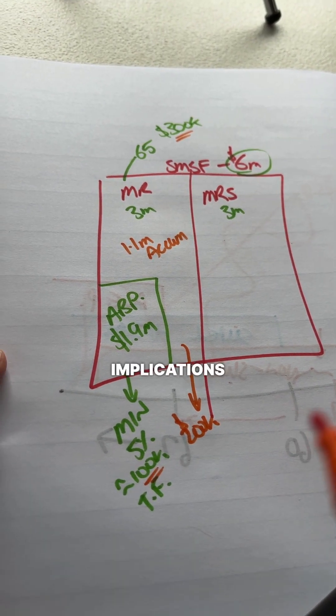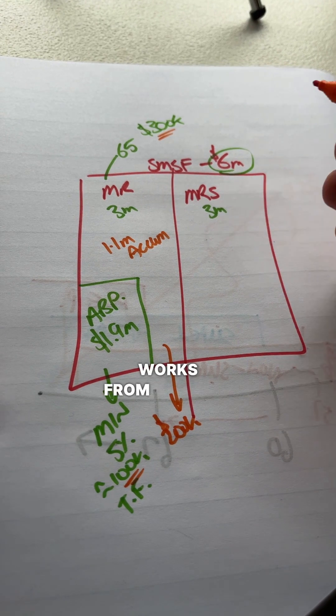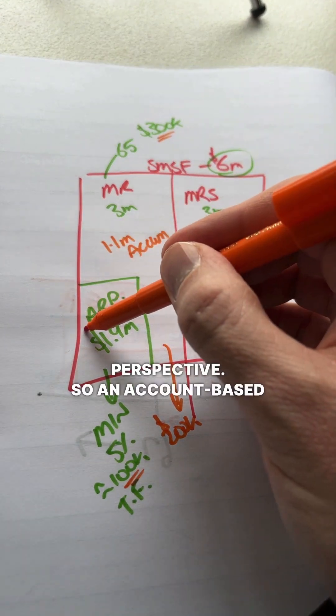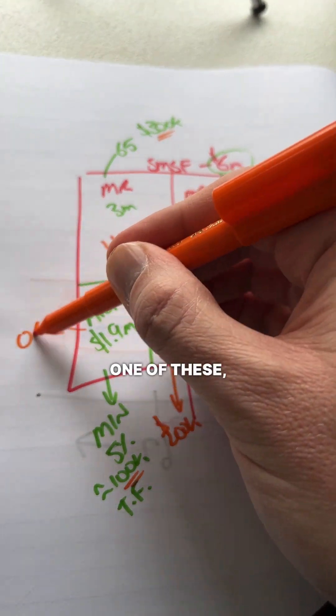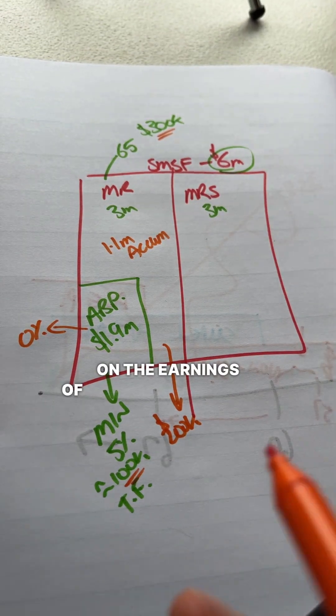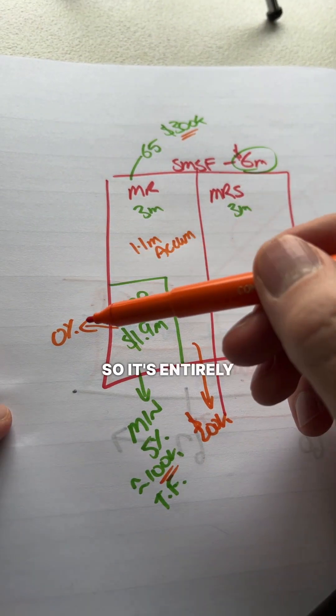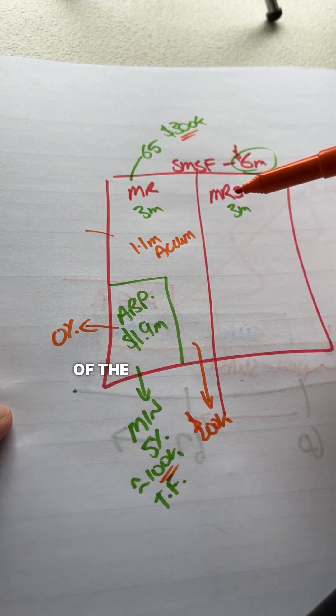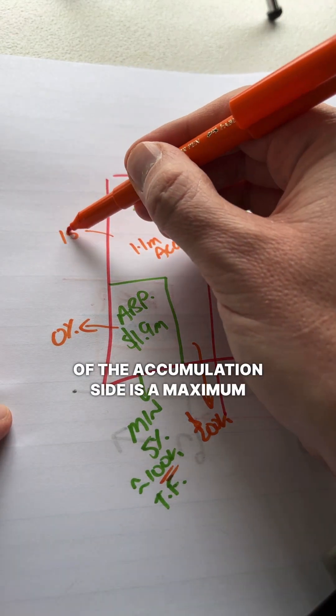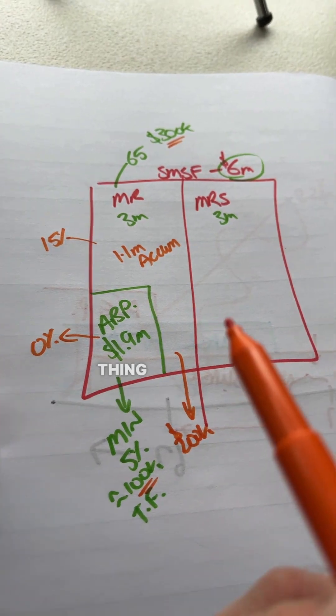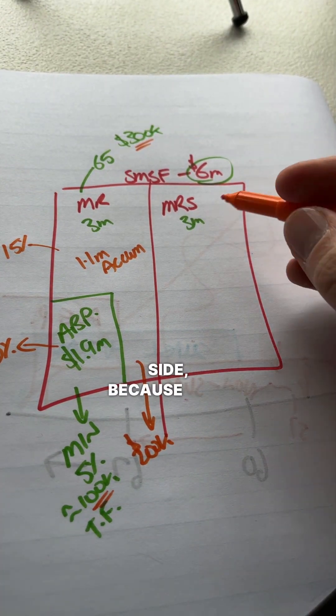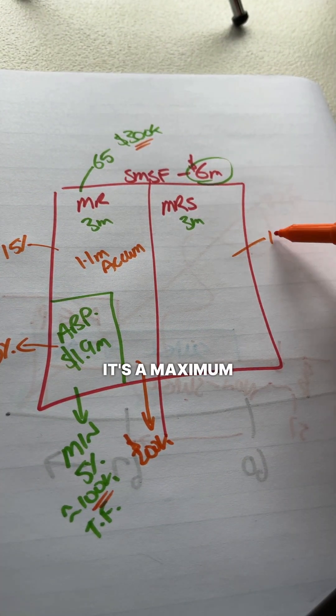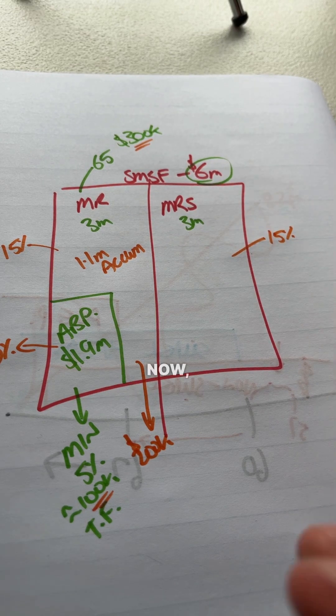So if we dive into the tax implications and how this works from the SMSF perspective. So an account-based pension, when you start one of these, the tax rate on the earnings of that account-based pension are zero. So it's entirely tax-free. The tax rate on the earnings of the accumulation side is a maximum of 15%. And the same thing over here on the wife's side, because hers is all in accumulation, it's a maximum of 15% as well.